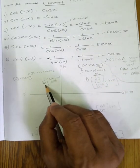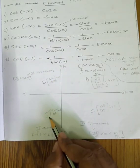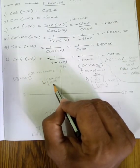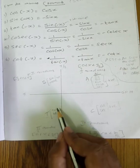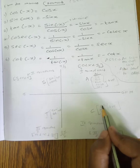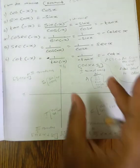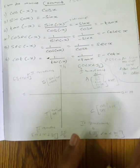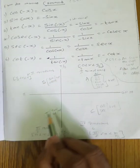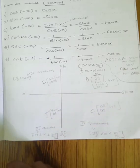Second quadrant — S: sin and cosecant are positive. Third quadrant — T: tan and cot are positive. Fourth quadrant — C: cos and secant are positive. So in this quadrant, first quadrant: all are positive. Second quadrant: sin and cosecant positive. Third quadrant: tan and cot positive. Fourth quadrant: cos and secant positive.